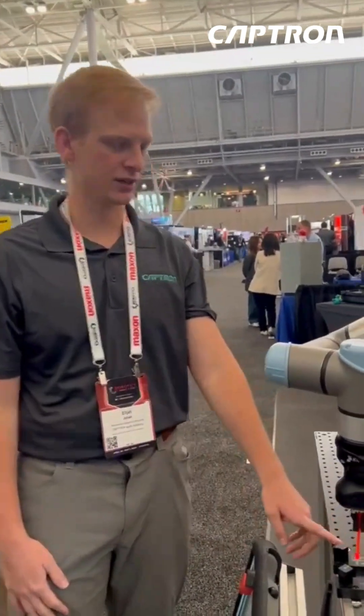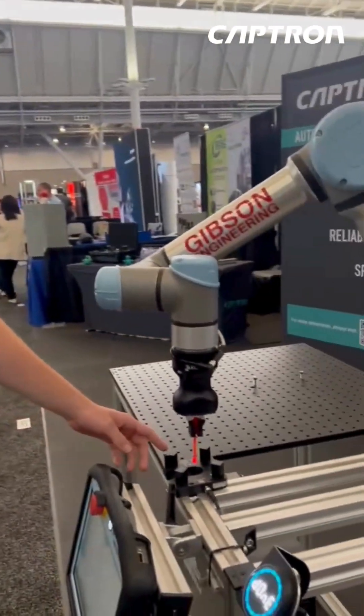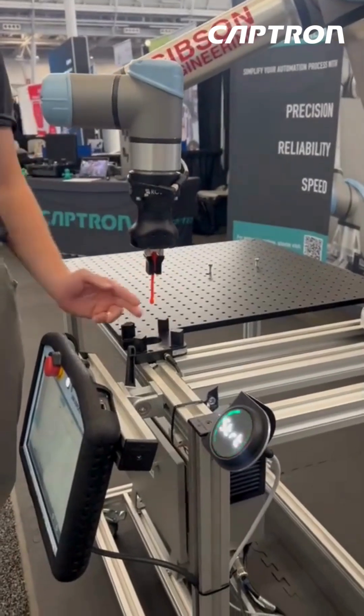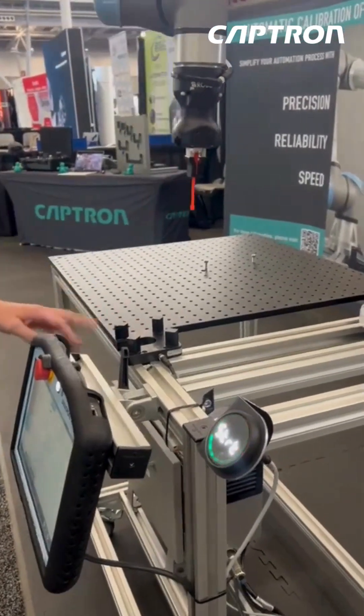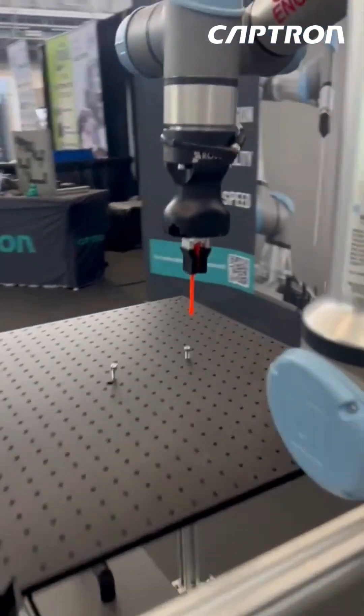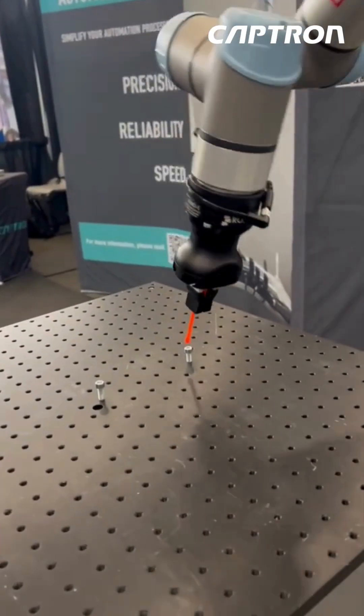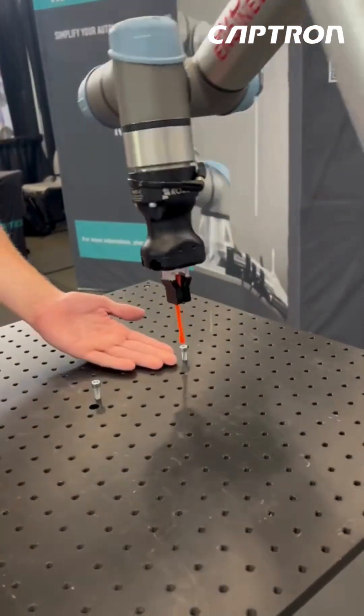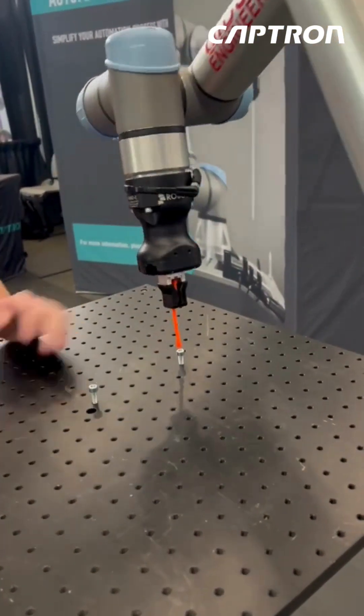So as you can see here, the robot is going through all its axes—the X, Y, Z—and also the orientation. And as you saw earlier, I bent the tool, but the robot knows exactly where to go despite the tool change.